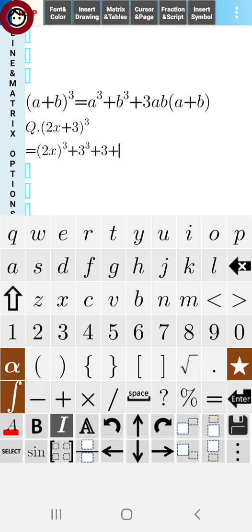in place of a, we have 2x into b, that is 3, bracket open, 2x+3, bracket close. We have written (2x)³ + 3³ + 3·2x·3·(2x+3).